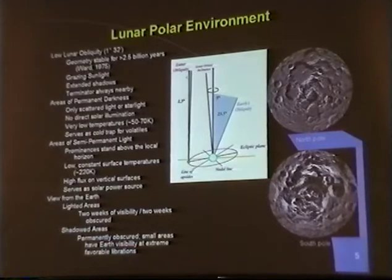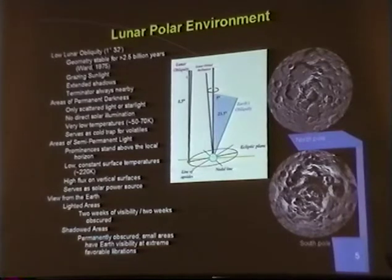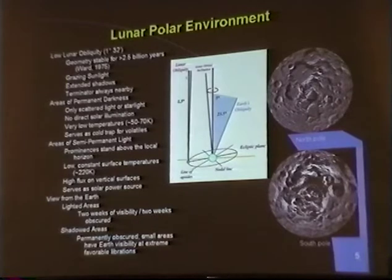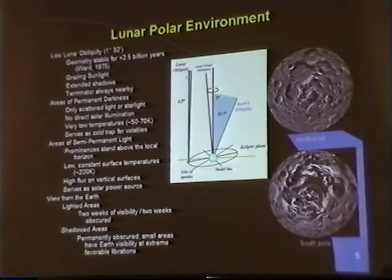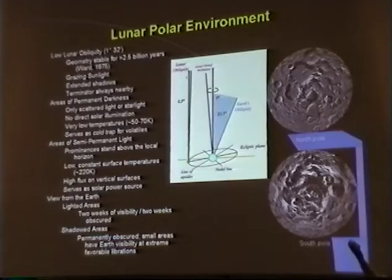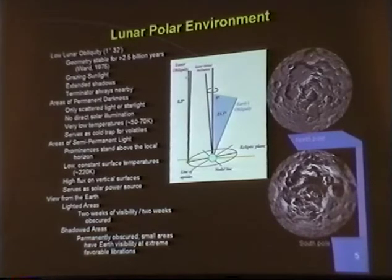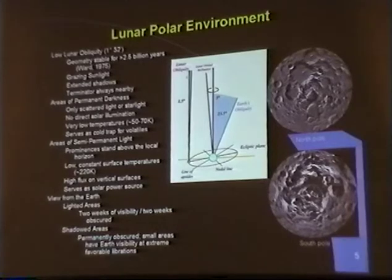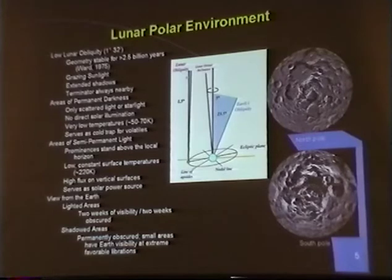The poles of the moon are a really interesting environment, largely a consequence of the spin axis orientation. The spin axis of the moon is inclined only one and a half degrees — nearly perpendicular. As the moon orbits the Earth, it's nearly vertical to the ecliptic plane. If you're at the pole, over the course of a lunar day — a rotation of 708 hours — you'll see the sun move around the horizon 360 degrees, sometimes slightly above, sometimes slightly below. Effectively, the sun is at the horizon all the time. Because the moon has topography, on a peak you might see the sun all the time, and in a hole you might never see the sun. That simple principle — the spin axis orientation — is responsible for the unique environment of the poles.